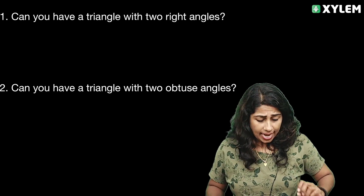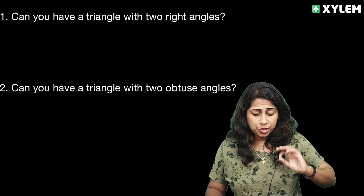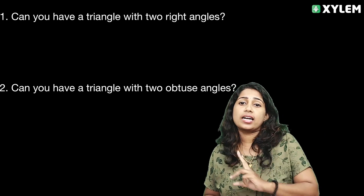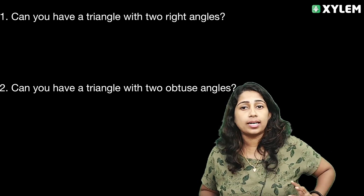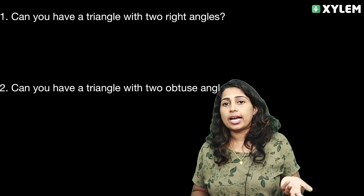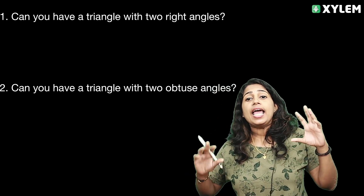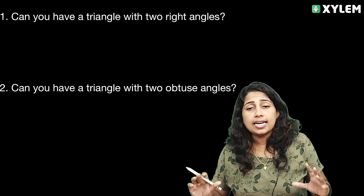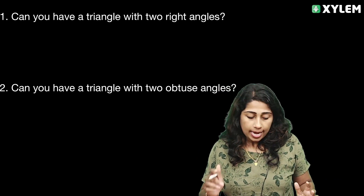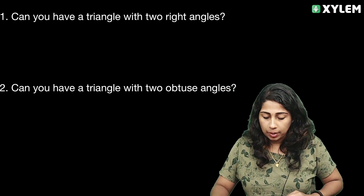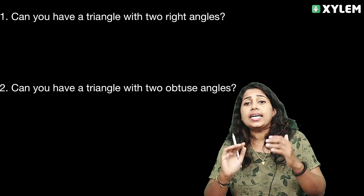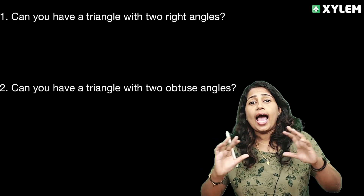The first question is: Can you have a triangle with two right angles? If you have two right angles in a triangle, we need to think about the different types of triangles and what we know about right angles. The key property here is called the Angle Sum Property.